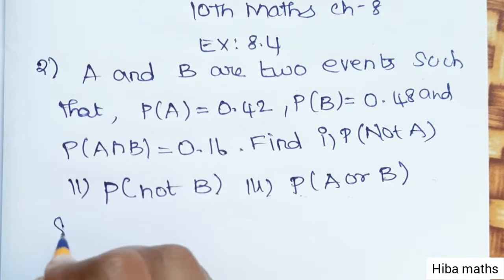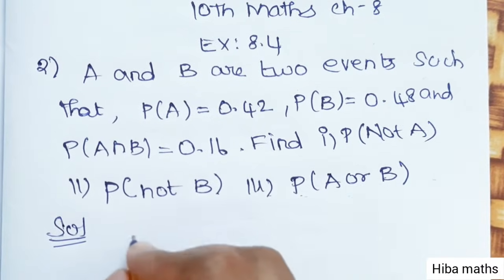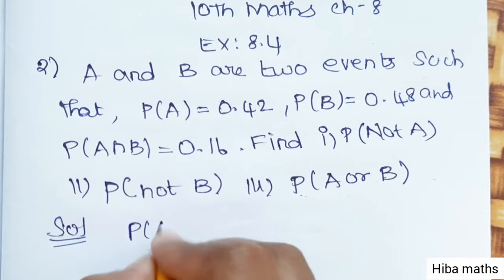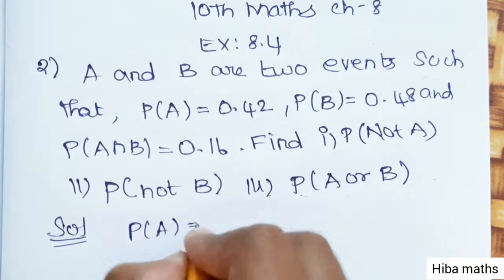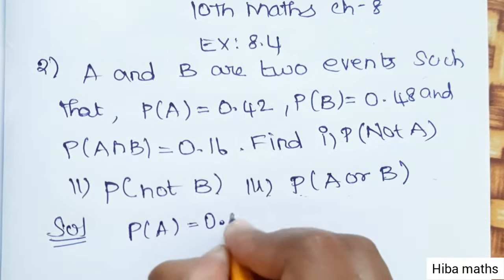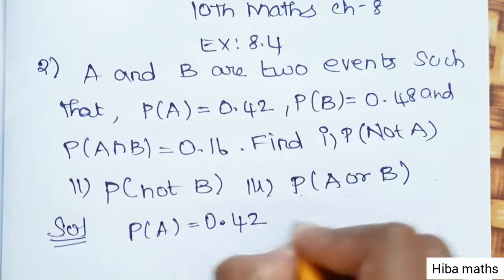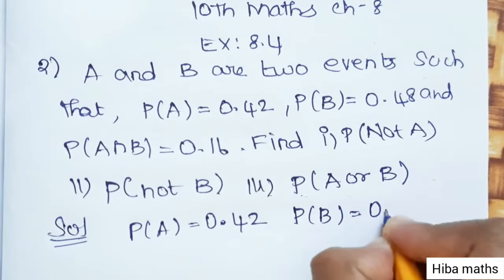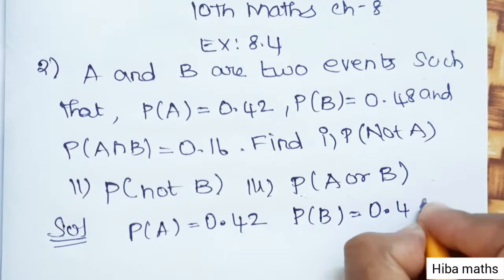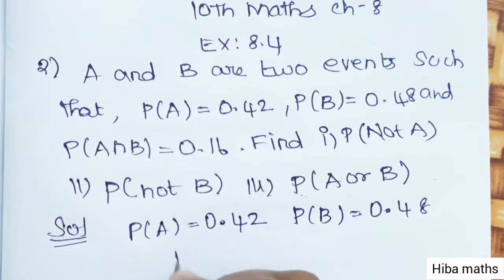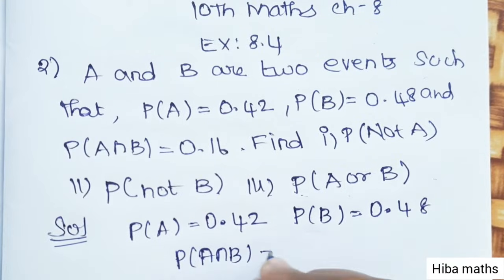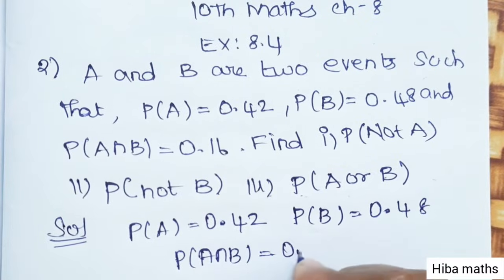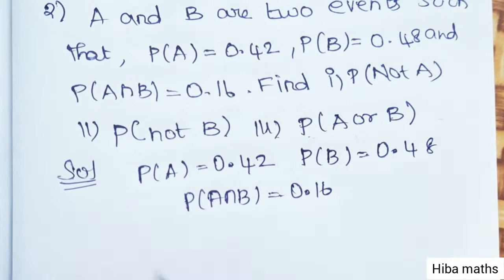So in the solution, the given data is: P(A) = 0.42, P(B) = 0.48, and P(A intersection B) = 0.16.